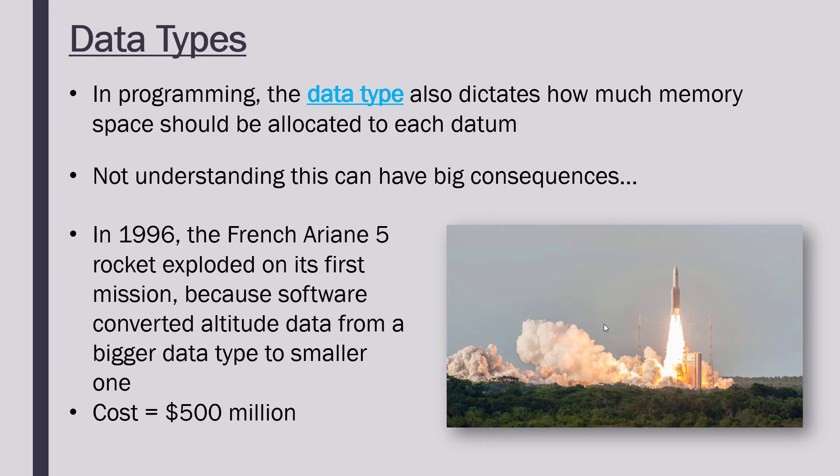The casualty data suffered an error and the rocket crashed at a cost of five hundred million dollars. Thankfully no one was on board the rocket, so no one died, it was just a robot. But still, a lot of money lost by converting data types and not fully understanding the difference and the importance of them.